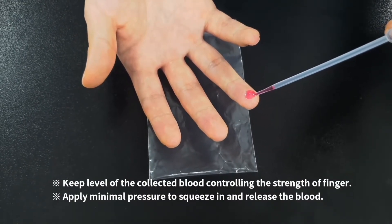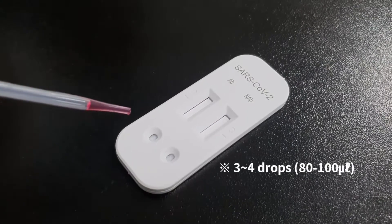Collect blood sample using pipettes and add 3 to 4 drops of blood into the two wells each.